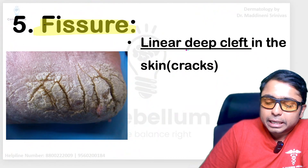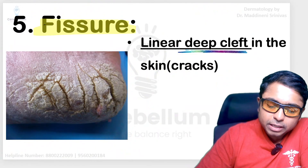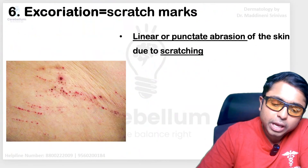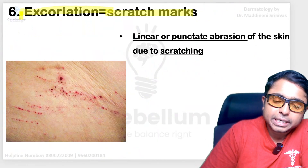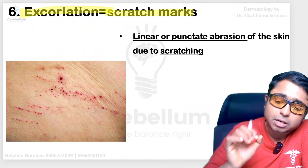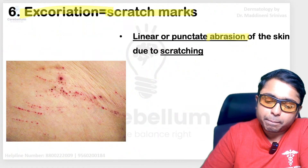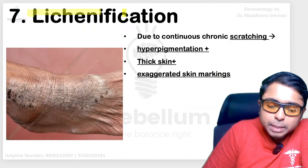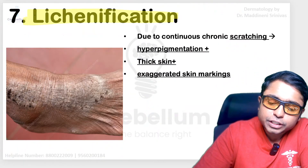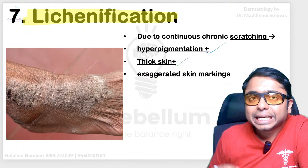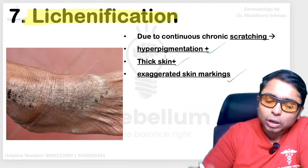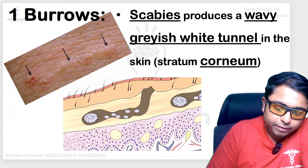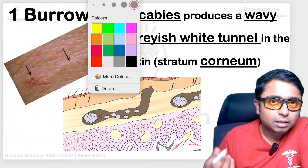A fissure is a deep cleft which can be seen in the skin — most likely the cracked heels you may have seen, or anal fissures. Next, scratch marks seen over the body are scientifically called excoriation marks — these are linear or punctate abrasions due to scratching from itching. Next is lichenification, which is a combination of three changes: hyperpigmentation of the skin, thickening of the skin, and exaggeration of the skin markings. All these happen due to excessive itching and scratching, and represent a safety mechanism of the skin in response to chronic scratching.